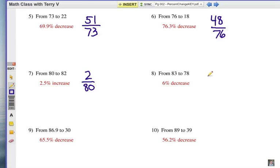In number 8, you're going to subtract, and you're going to get 5, and divide that by the original number of 83, and when you divide that out, you're going to get a 6.0 percent decrease.